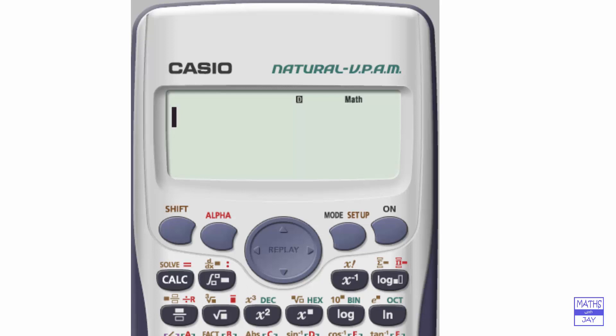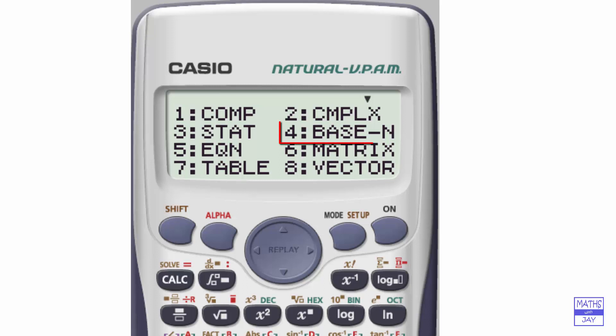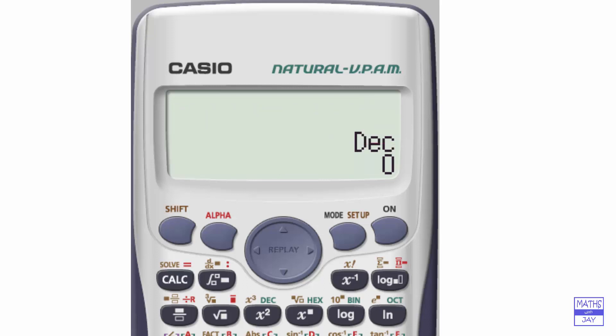We want to do some binary arithmetic, so let's put our calculator into binary mode first of all. We start with the mode button and base n, so that's going to be 4. The default it comes up with is decimal. We want binary, so we're looking for bin in green, and now we're in binary.